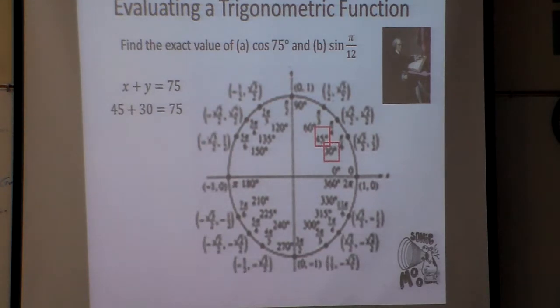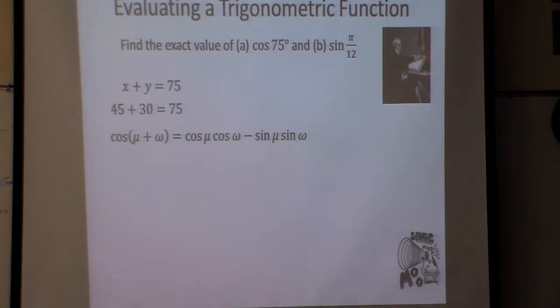So here's what's going to happen: 45 plus 30 is 75 degrees. If I go back and look at my formulas, the cosine of u plus w is equal to the cosine of u, which would be in this case our first one, times the cosine of w minus our sines in the same order here.